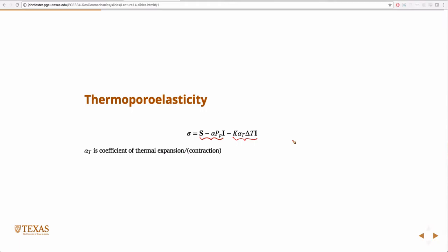and delta T would be just the temperature at which you're doing the measurement—the temperature of the reservoir minus some reference temperature. Typically, the reference temperature would be 20 degrees C or something.